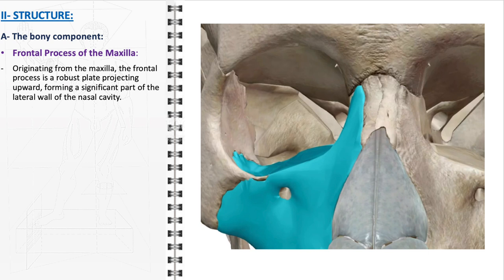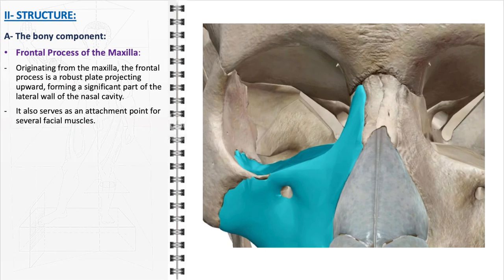The bony component of the nasal pyramid also includes the frontal process of the maxilla. Originating from the maxilla, one of the primary bones of the face, the frontal process is a robust vertical plate that projects upward. This projection plays a pivotal role in shaping the lateral wall of the nasal cavity, contributing to the overall framework and stability of the nasal structure, and also serves as an attachment point for several facial muscles.